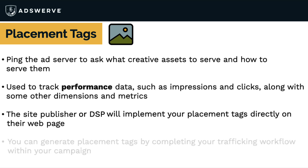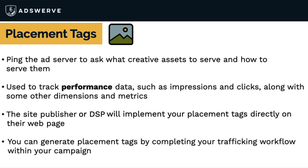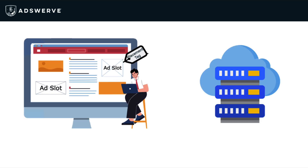To generate placement tags, complete your trafficking workflow within your campaign — we'll cover this process in other training videos. The tags will then tell your publisher or DSP exactly which ads to serve, how often, and for how long. In short, placement tags help serve an ad to a third-party site.